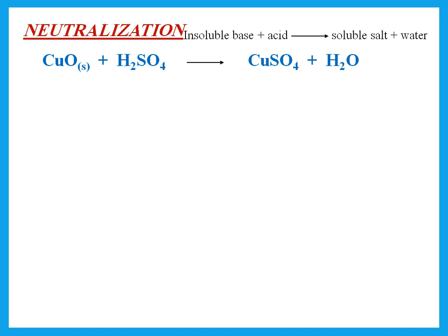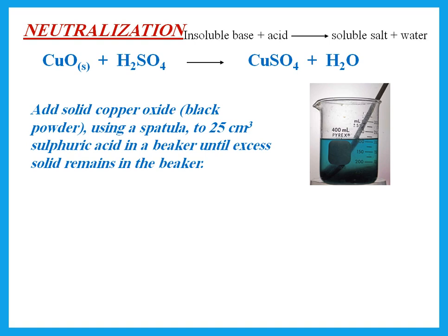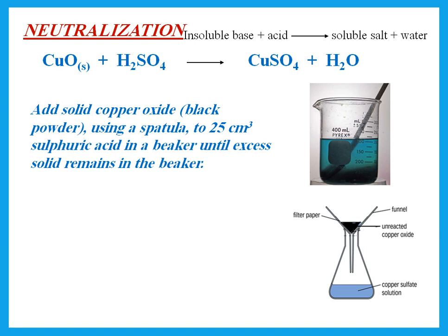We use copper oxide with sulfuric acid. Copper oxide does not dissolve in water, so we cannot do titration. We add a certain amount — say 25 cm³ — of sulfuric acid to a beaker and add solid copper oxide using a spatula. As copper oxide reacts with sulfuric acid, it dissolves to form a blue copper sulfate solution. As we add more copper oxide, at some point all the sulfuric acid has reacted and excess solid remains in the beaker — that tells us the reaction is complete.